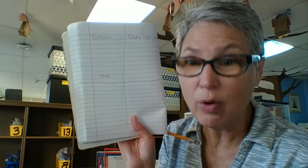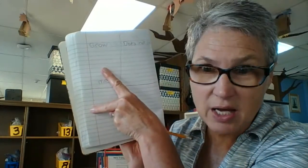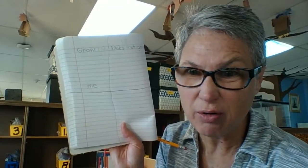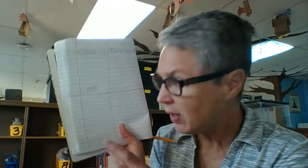So I wonder what you will come up with and what you will draw and label in your journal. Two things that grow and two things that do not grow. I wonder what I'll put down here. Maybe I can find something in my classroom. I better go and take a look. Have fun looking for things that grow and do not grow.